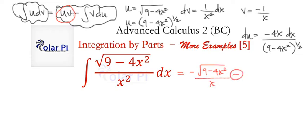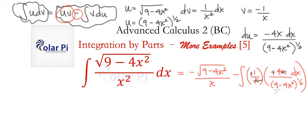That's UV, and then minus—this minus sign is for that—and then integral, and then V, negative 1 over x, and then dU, which is this fellow right here. So that's negative 4x divided by 9 minus 4x squared to the 1/2 power. Before we move on, there's some simplifying we could do. This x and this x cancel, this minus sign and this minus sign turn into a plus.